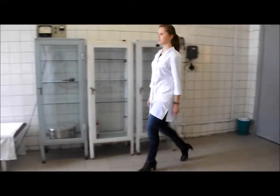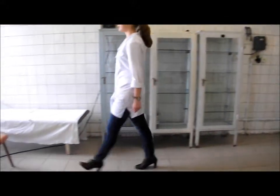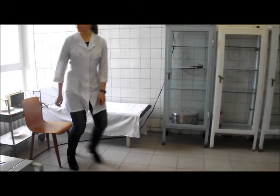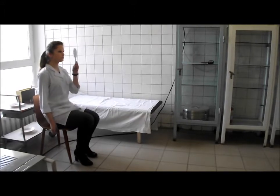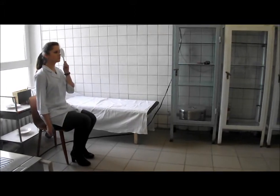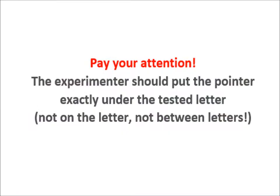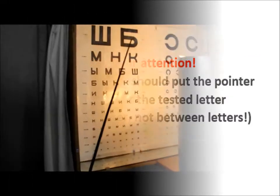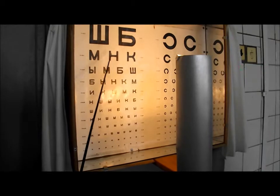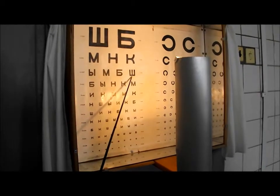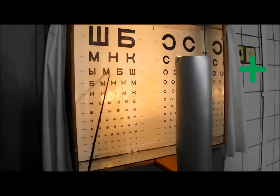Put the person under the test on the chair at 5 meters from the table and ask her to close one eye with the special shield. The experimenter shows the letters with the help of the pointer to the person under the test and asks her to call them.